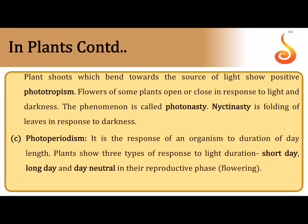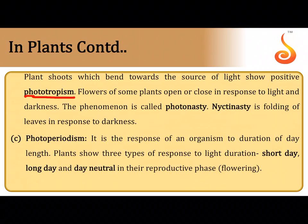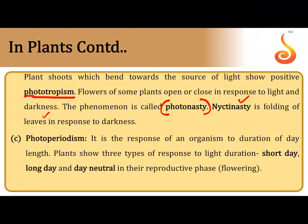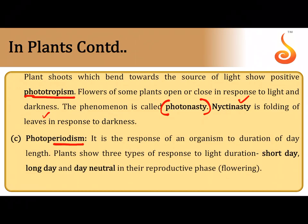Plant shoots bend toward the direction of light — this is called phototropism. Some movements do not follow a specific direction in response to a stimulus; these are called photonasty. For example, at night the leaves of plants droop down — this is referred to as nyctinasty. Tropism is a directed movement toward the stimulus; nasty movements have no specific direction.